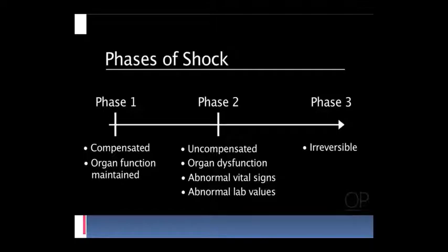Ab shock ko detail mein padhenge, iske mechanism ko padhein - pathogenesis. To humne bola ki: reduce in the effective circulating blood volume, second reduce supply of oxygen and other nutrients to the cells and tissues, and sequence of cell injury due to hypoxia.